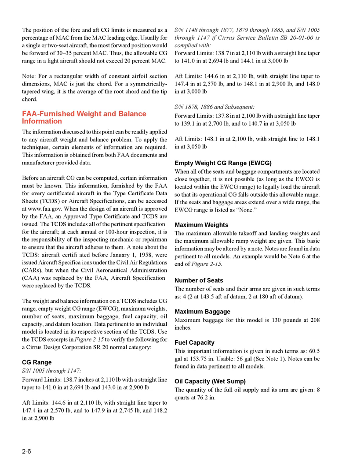Maximum weights: the maximum allowable takeoff, landing, and ramp weights are given; this basic information may be altered by a note found in data pertinent to all models — for example, note 6 in figure 2-15. Number of seats and their arms are given, such as: 4 seats — 2 at 143.5 in. aft of datum, 2 at 180 in. aft of datum. Maximum baggage for this model is 130 pounds at 208 inches. Fuel capacity: 60.5 gallons at 153.75 inches, usable 56 gallons (see note 1). Oil capacity (wet sump): 8 quarts at 76.2 inches.